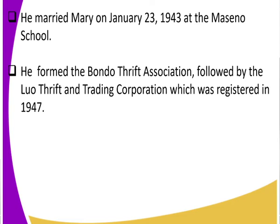Briefly, we have looked at the early life of Oginga Odinga — when he was born, when he started his education, when he went to Makerere University, and when he returned to Maseno School to teach starting in 1943. By 1947, he had also moved into forming associations, including the Bondo Thrift Association.